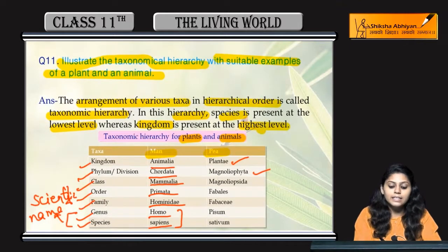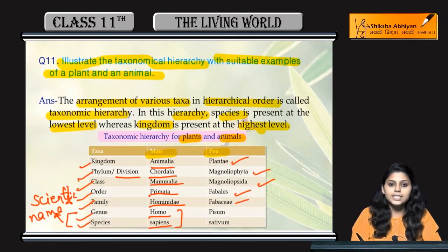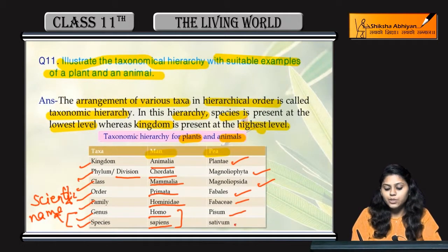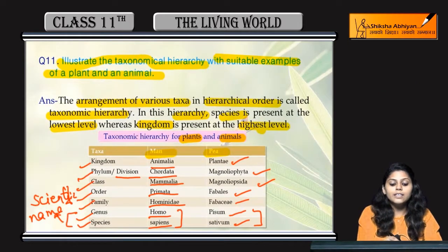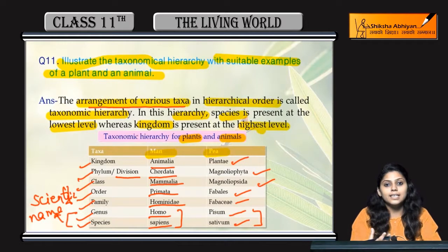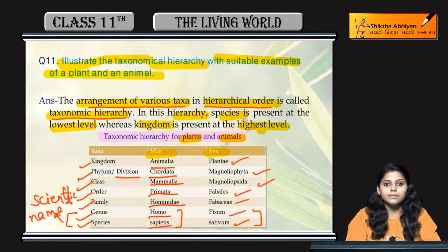For the pea plant, the division is Magnoliophyta, class is Magnoliopsida, order is Fabales, and family is Fabaceae. The genus is Pisum and species is sativum, so the pea plant is called Pisum sativum. This illustrates the different ranks of taxa in taxonomic hierarchy.